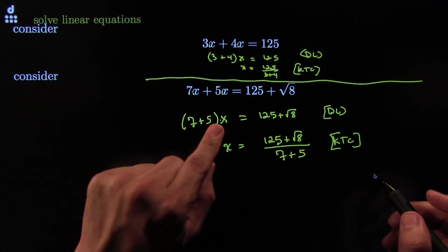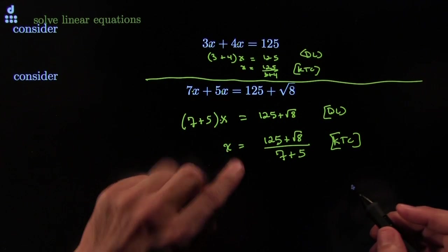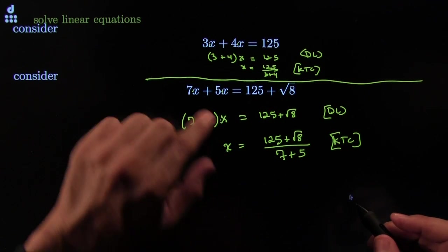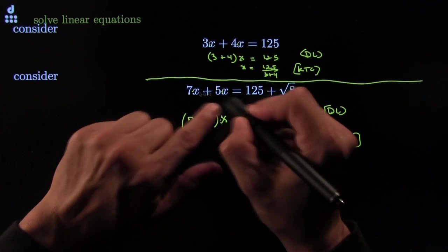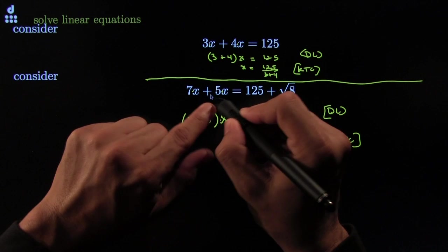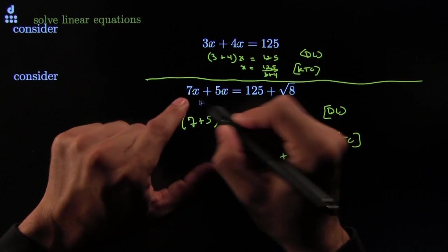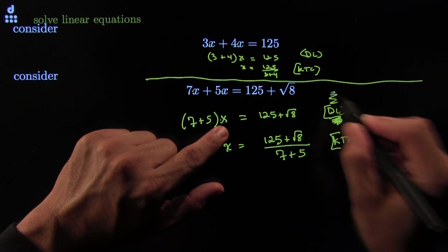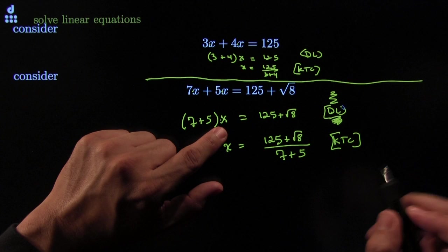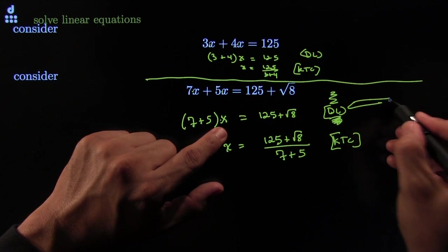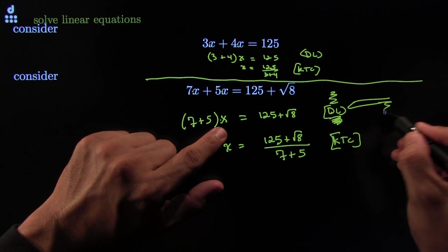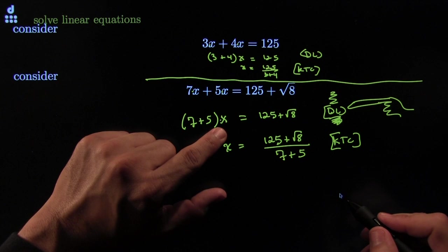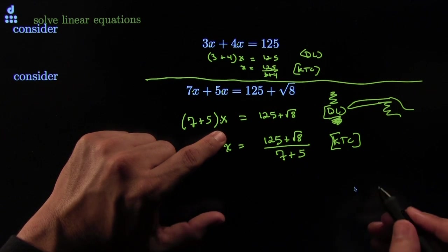Step 3 is easy, right? It's almost as easy as Step 4. Step 4 was just kill the coefficient. Step 3 says, hey, maybe sometimes you have more than one x, more than one coefficient — just gather them using the powerful, famous distributive law. This is what helps you gather all the x's into one.